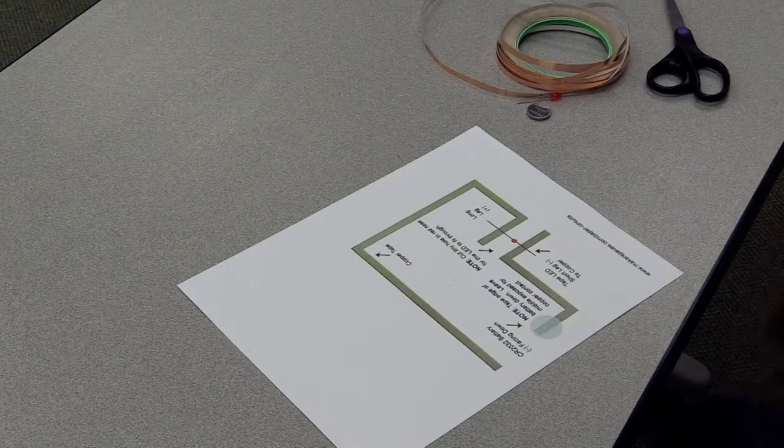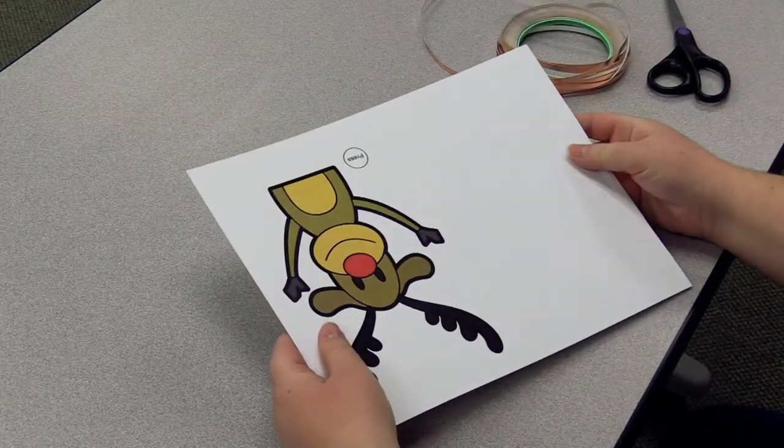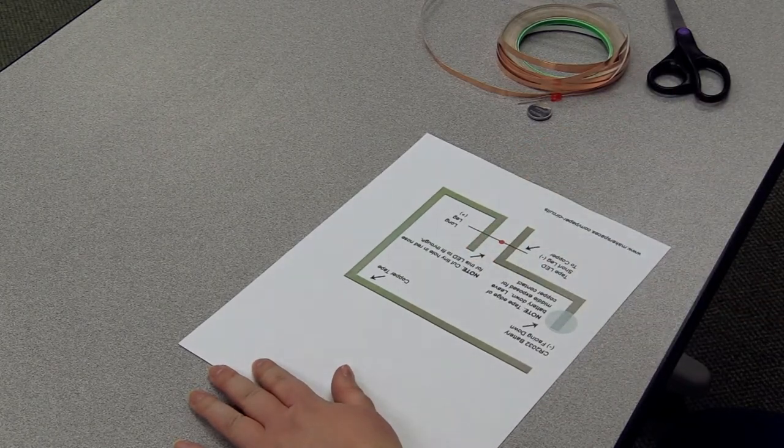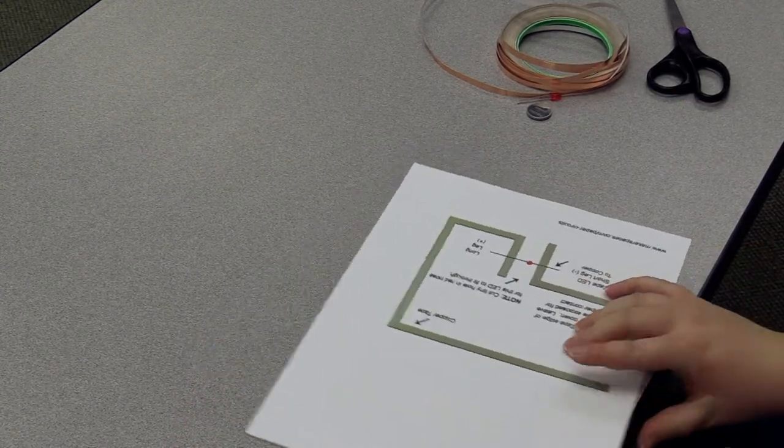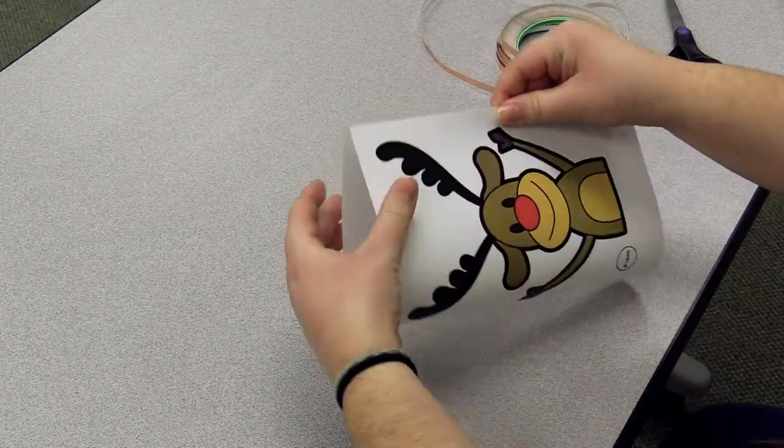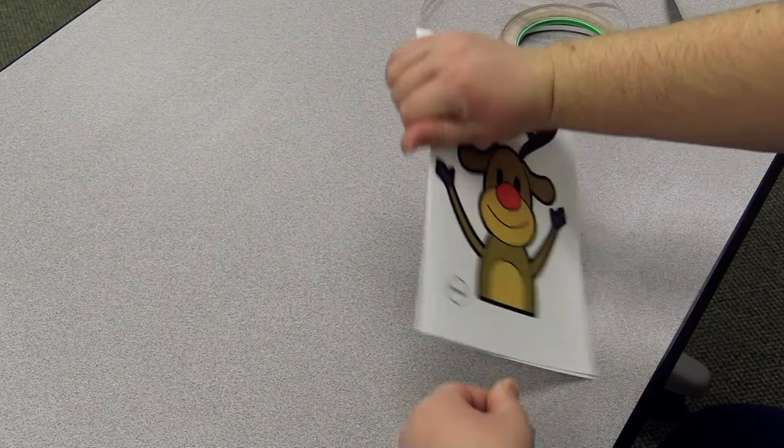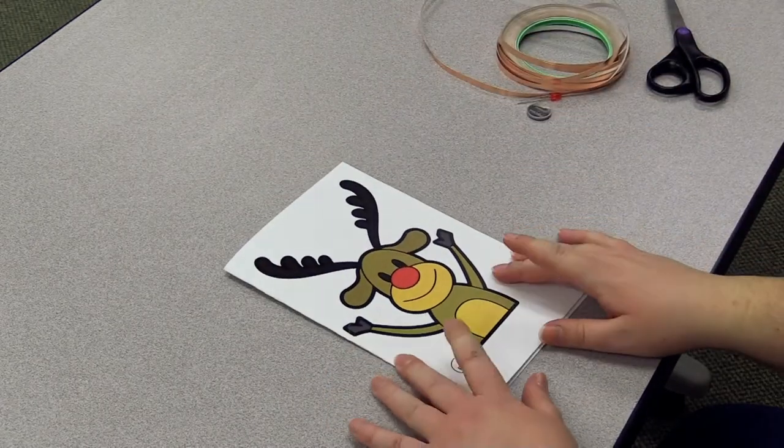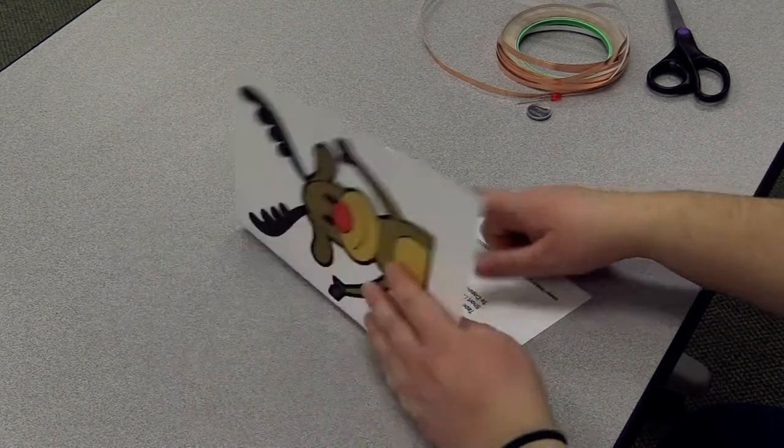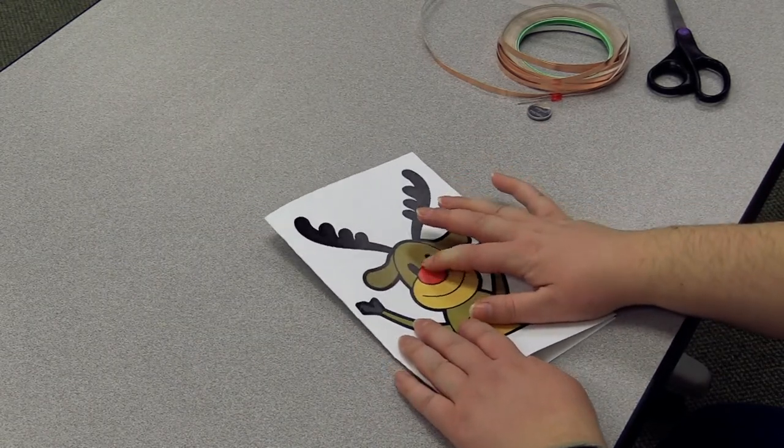Alright, so what's really great about these templates is that they have the instructions on exactly where to put all the copper tape, but the first thing you're going to do is simply fold your template right in half. And hopefully if it's folded right in half, the press button will be exactly where it needs to be on the page and where you're going to put the light later will also be directly where you need it to be.